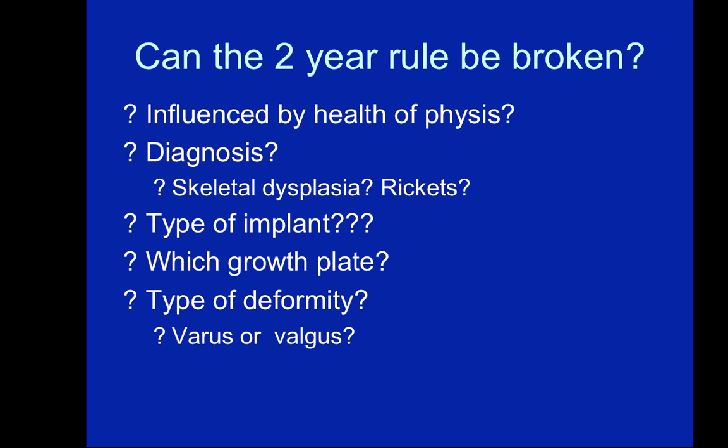We have more questions than answers. Can the two-year rule be broken? I think it can be influenced by the health of the physis or, more specifically, the diagnosis. We can't lump together patients with skeletal dysplasia, rickets, or iatrogenic cases. In the future, we might find the two-year rule can be broken with different types of implants. The anatomic growth plate may also matter — it might differ at the distal femur, proximal tibia, or distal tibia. Even the type of deformity, varus or valgus, may have its own set of rules in the future.